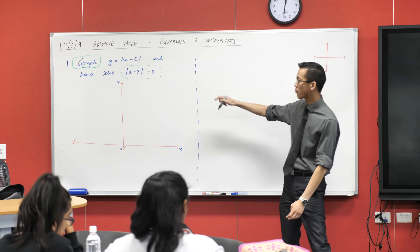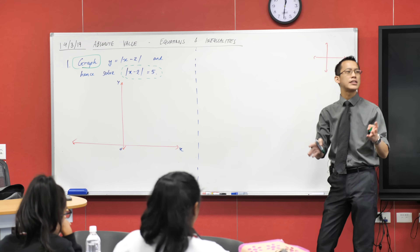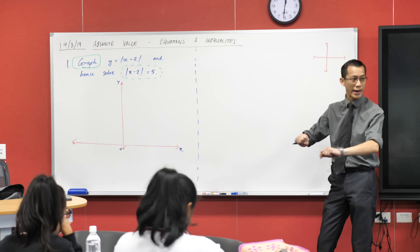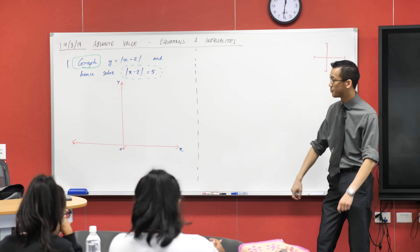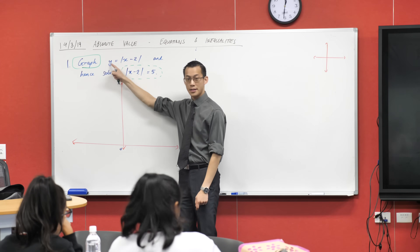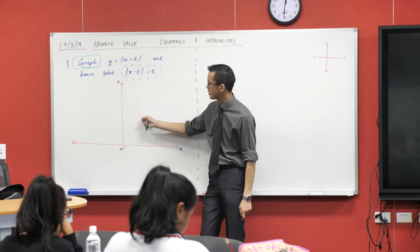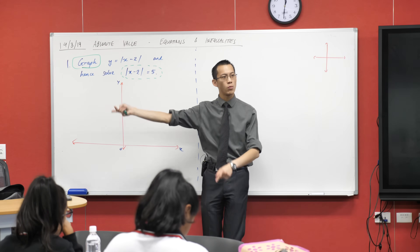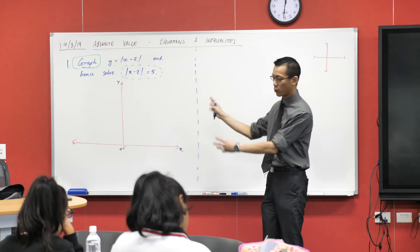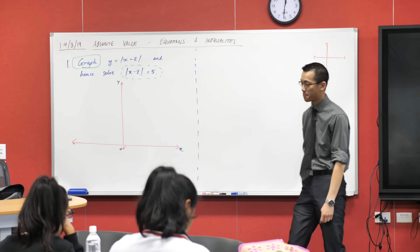So we're going to start off with ones that you can solve either way, and then we're going to move into areas where there's a clear advantage to solving it visually and not cracking the algebra out at all. So where we're going to begin is graphing this function onto the axes. We'll use it to solve this equation, then also use it to solve a closely related inequality.